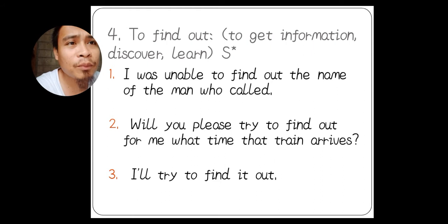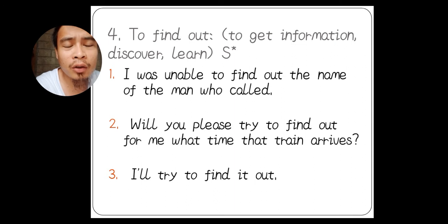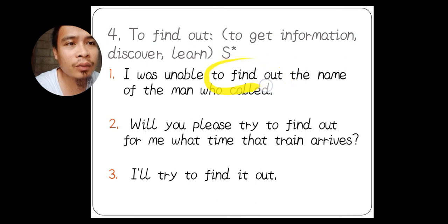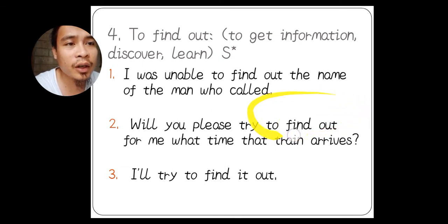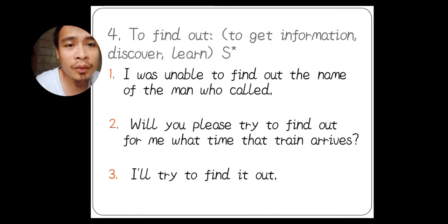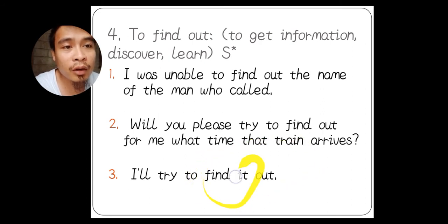Number four: 'to find out,' meaning to get information, to discover, or to learn. Note that this idiom is separable. For example: 'I was unable to find out the name of the man who called.' Another example: 'Will you please try to find out for me what time the train arrives?' Since it is separable, you can also say: 'I'll try to find it out,' with the object inserted between the parts of the idiom.